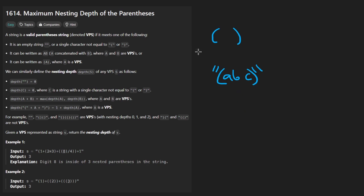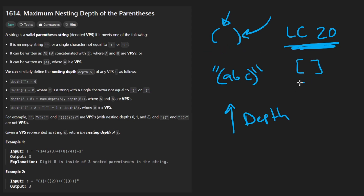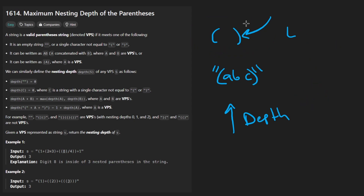What we want to do is calculate the depth of this valid parentheses string. We don't have to worry about validating it — it's not like LeetCode problem 20, valid parentheses. It's actually much more simple than that, because first of all we're only dealing with this type of parentheses. We don't have brackets, we don't have curly braces. This is going to be very simple.